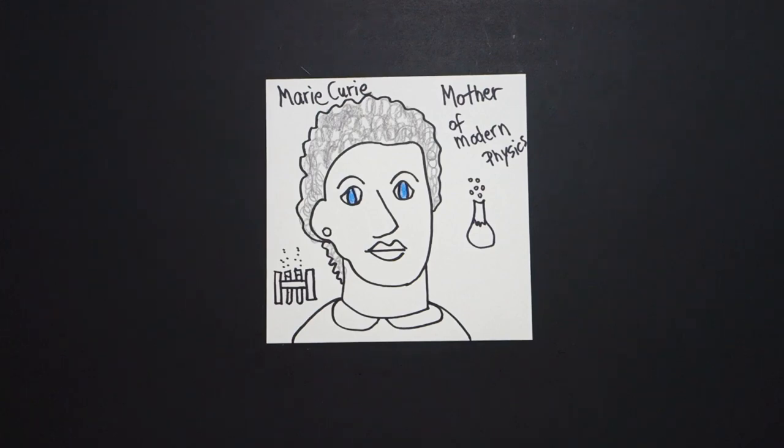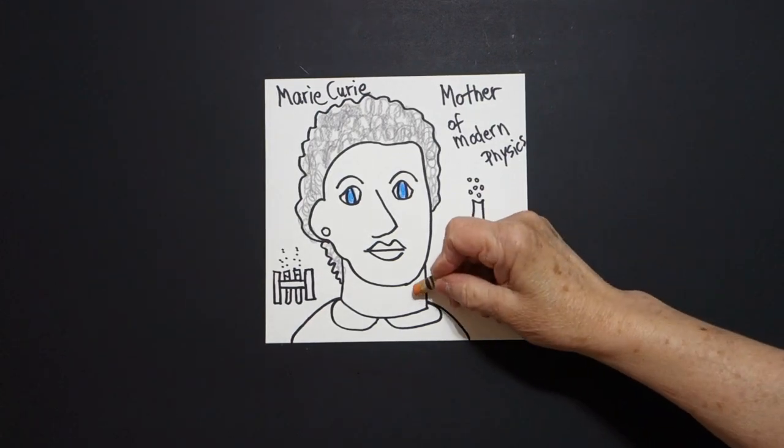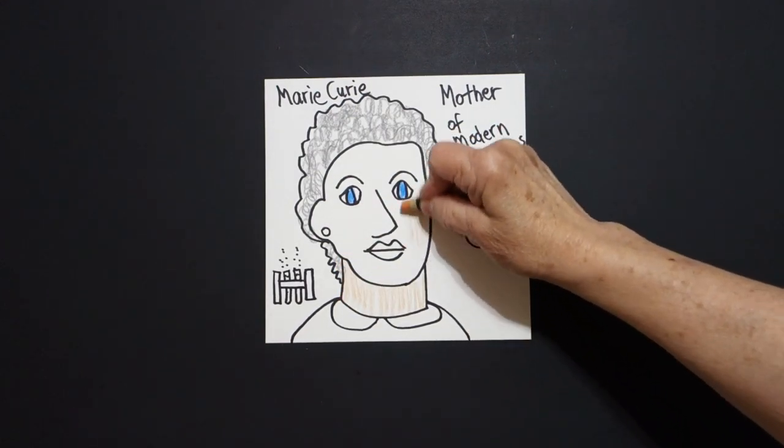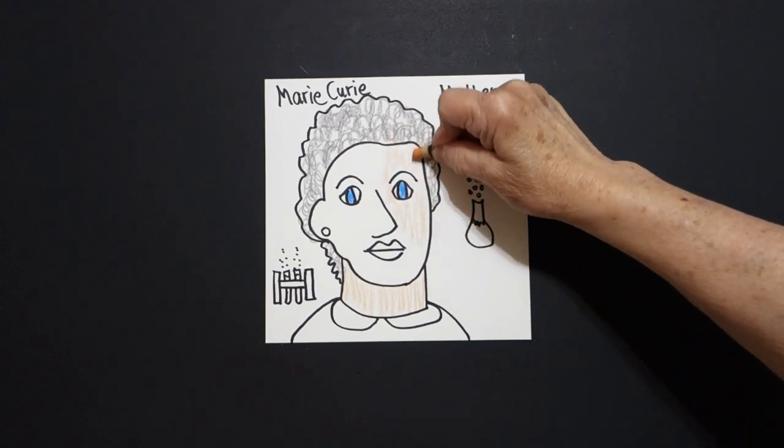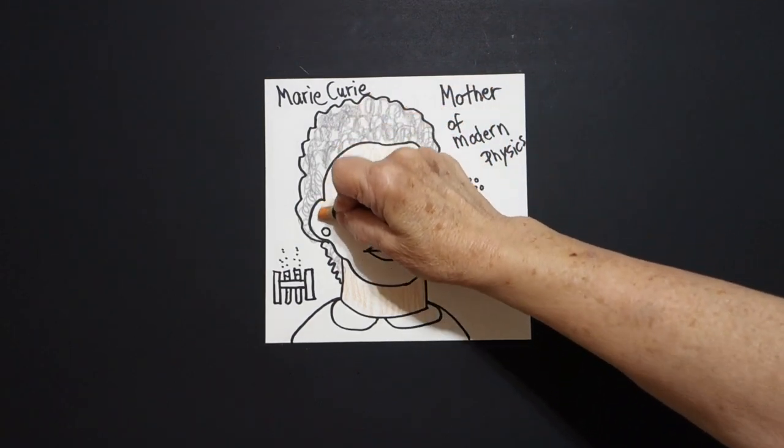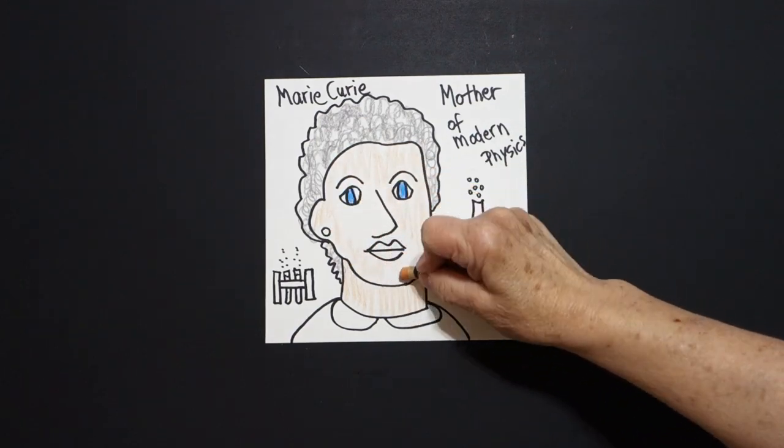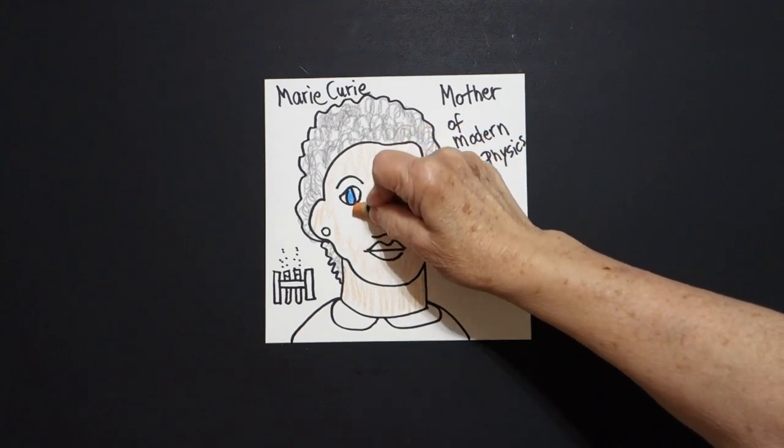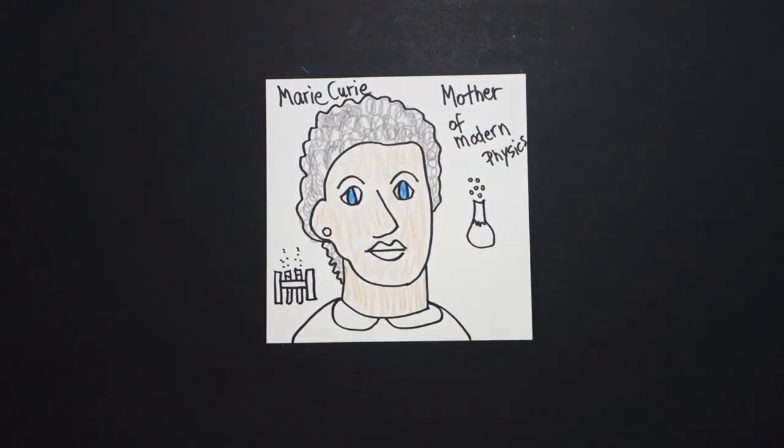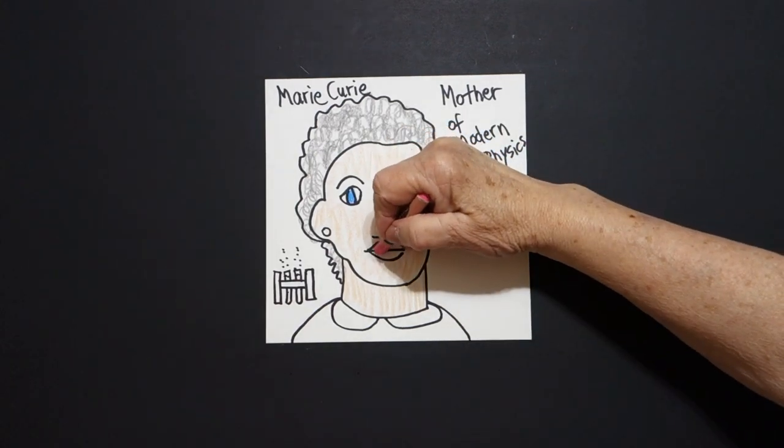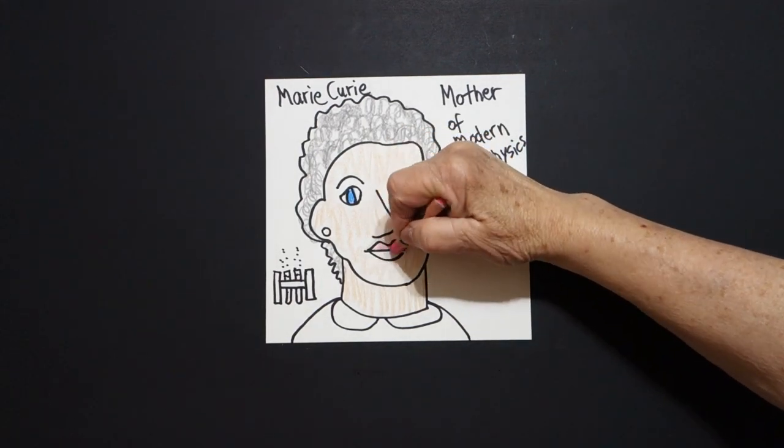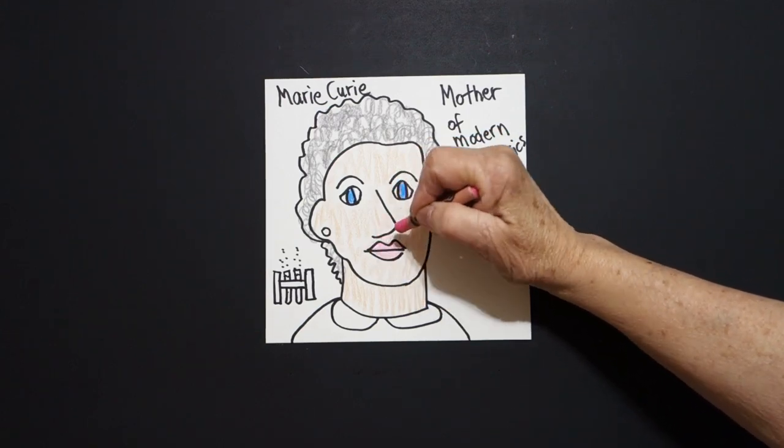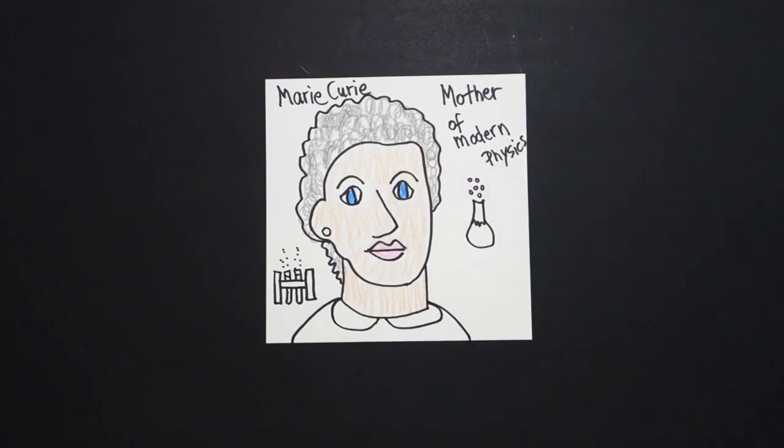Next, I've got multicultural crayons. If you do, you can use a color for her neck. Don't forget her neck, the space, and her regular face. If you don't have multicultural crayons, you can just leave it white. That's fine. And, I'm going to give her a little bit of color. We'll give her some pink lips. She was a scientist. I know she cared about how she looked, but women didn't wear a lot of makeup back then.